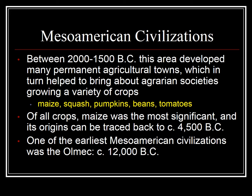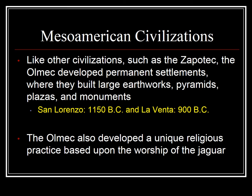Of the earliest Mesoamerican civilizations, it is the Olmec, who developed in Mesoamerica around 1200 BC. Like other civilizations such as the Zapotec, the Olmec developed permanent settlements where they built large earthworks, massive pyramids, plazas, and monuments. The Olmec had courtyards, established various games played with balls, had religious practices, political institutions, and permanent settlements. Around 1150 BC, the permanent settlement of San Lorenzo was built, lasting until around 900 BC when it was abandoned. They then built La Venta in 900 BC.